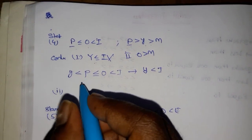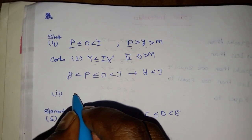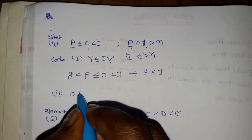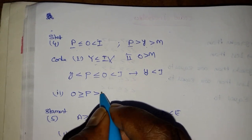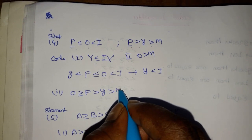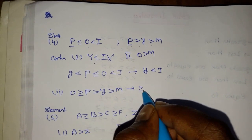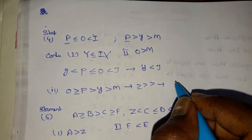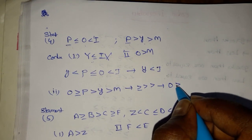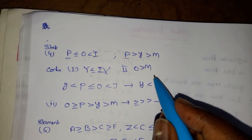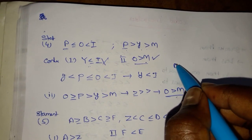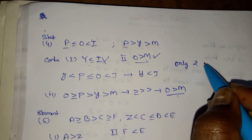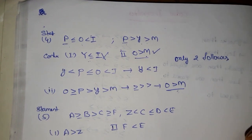Second conclusion: O greater than M. The common element between O and M is P. From O to P: O greater than or equal to P. From P to Y: greater than Y. From Y to M: greater than M. Final symbol: greater than or equal to, greater than — gives O greater than M. So O greater than M is correct. Only two follows.